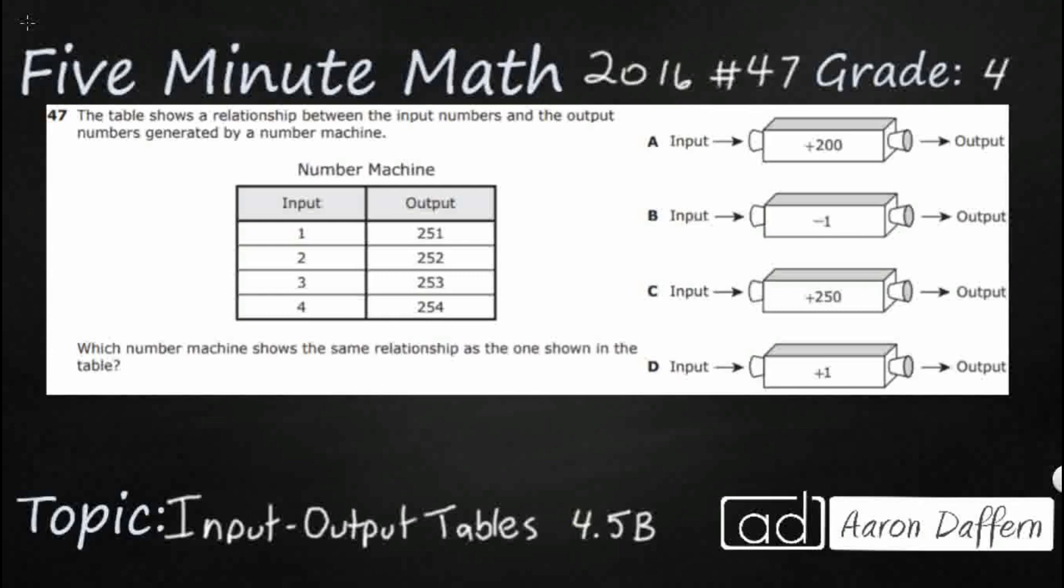So, we have a table here, and it shows a relationship between our input numbers and output numbers. We're putting them through a machine, and we're trying to find which machine—answer A, B, C, or D—shows this relationship.